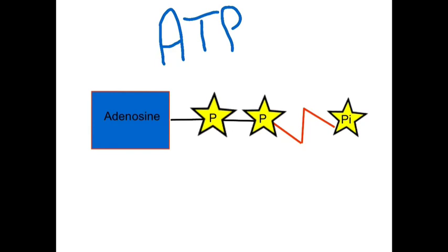It is between the second and third phosphate molecules that the energy is stored, in the form of a high energy bond. It is the body's job to transfer the chemical energy stored in the food we eat into the usable energy found in ATP.